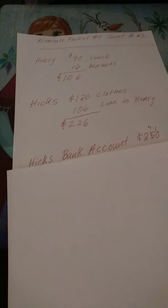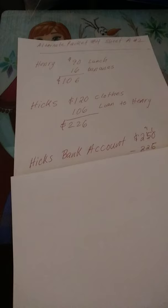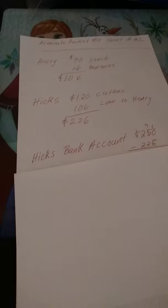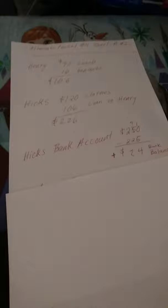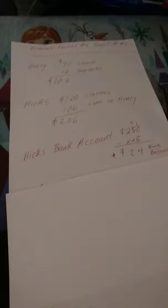Hicks' bank account was $250. Now minus the $226 that he spent. Remember, Hicks spent $226, so you take the $250 in his bank account minus the $226, and that gives you a positive balance of $24. Positive balance of $24. That's a positive bank balance.